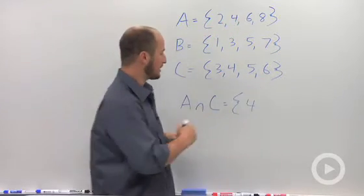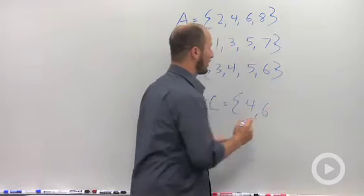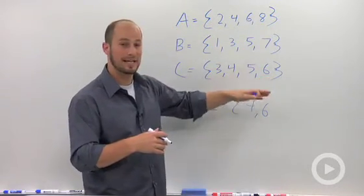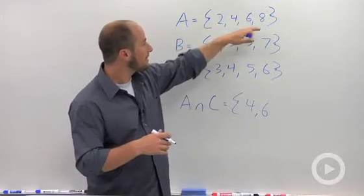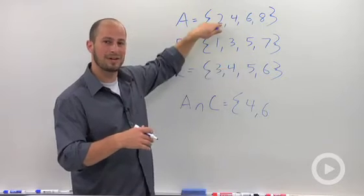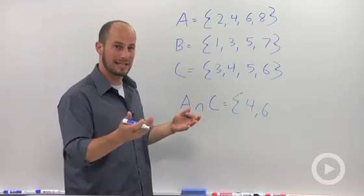8 is in A, not in C, so it's not in the intersection. Those are really the only numbers that are in there because C has the numbers 3 and 5, but we already determined those aren't in A, so they cannot be in the intersection as well.